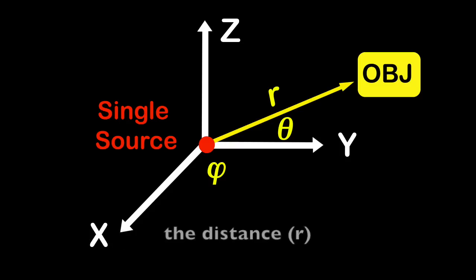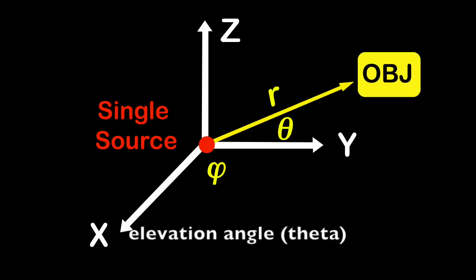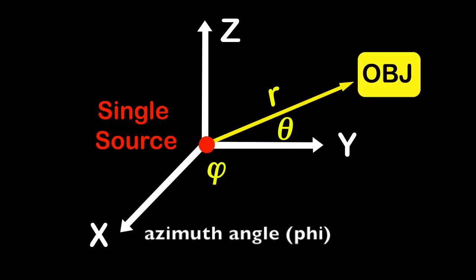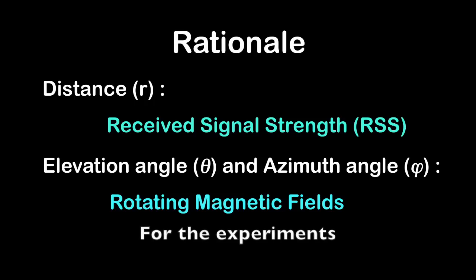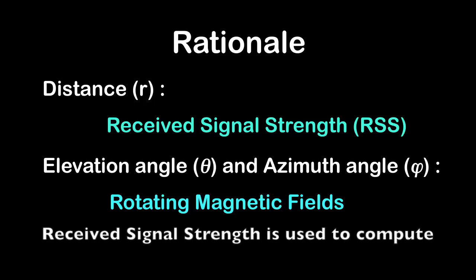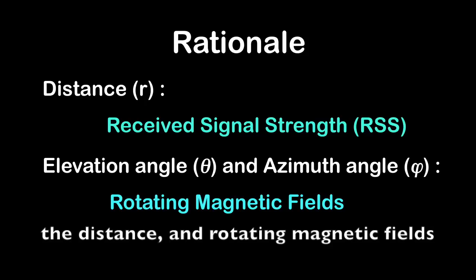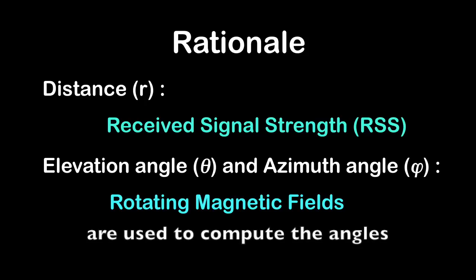I aim to obtain the distance r, elevation angle theta, and the azimuth angle phi of an object. For the experiments, received signal strength is used to compute the distance and rotating magnetic fields are used to compute the angles.